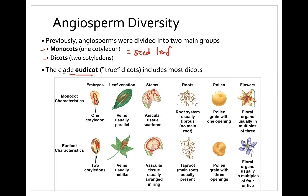Monocots typically have fibrous root systems — if you pull up some grass or a palm tree you would see the roots like this. Dicots tend to have a tap root, where the first root remains as the main root, like a carrot. The pollen grains are also different: monocots have pollen grains with one opening, while eudicots typically have three openings.